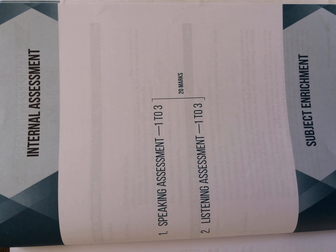Article 16 of the Constitution prohibits discrimination in employment in any government office. However, the government can allow reservation for any backward class of citizens if they are not adequately represented in the services under the State. The Bill seeks to amend Article 16 to permit the government to reserve up to 10% of all posts for the economically weaker sections of citizens.